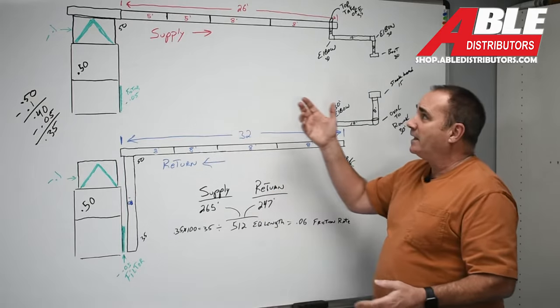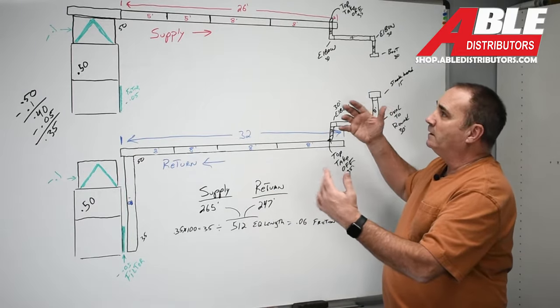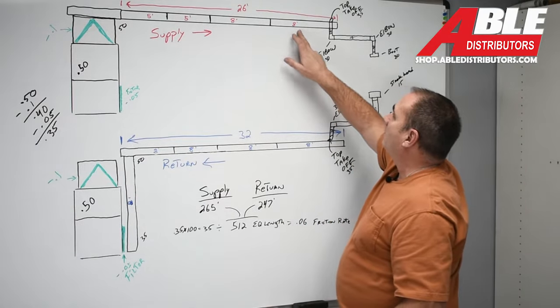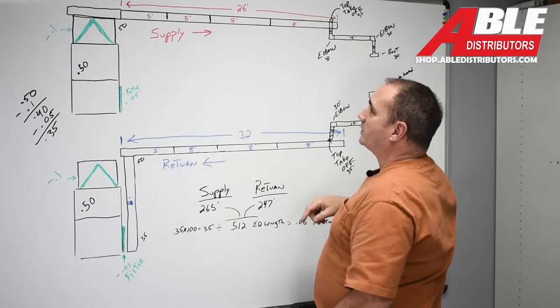So what I did was I kind of did just a simple little layout. Now I got 5 feet, 5 feet, 8 foot of duct, 8 foot of duct. That adds up to be 26 feet.